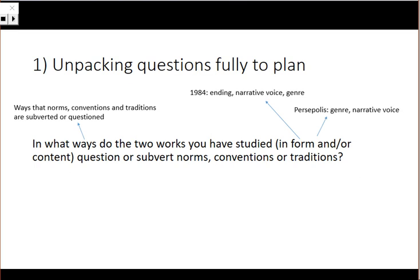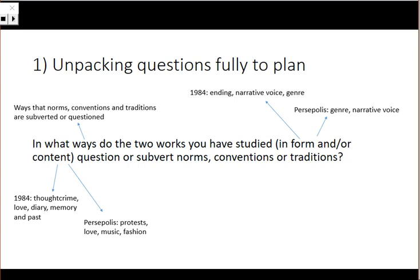Persepolis is more obvious in terms of that because it is a graphic novel, and also the narrative voice. Because it's a graphic novel, we get to see different aspects of the narrative voice — we get to see Marjane as a child through the use of speech bubbles, but also Marjane as an adult through the use of captions. And of course there's content in both: thought crime is a way that people subvert the norms in 1984. Love is another way. The diary. And how Big Brother tried to eradicate memory and the past. And in Persepolis there's protests, love goes against traditional views, music and fashion.